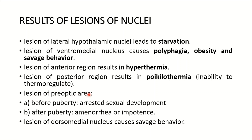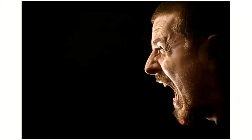Lesion of the preoptic area: if it is before puberty, it causes arrested sexual development; if it is after puberty, it leads to amenorrhea in females or impotence in males. And lesion of the dorsomedial nucleus causes savage behavior.